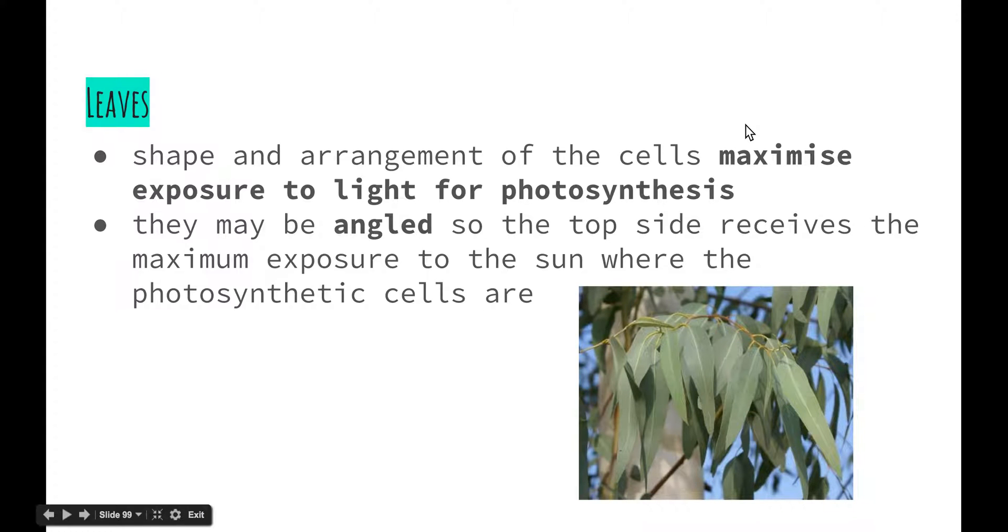The shape and arrangement of leaves usually helps to maximize the exposure of the cells to light in order to photosynthesize. They may be angled so that the top side receives the maximum exposure to the sun as this is where most of the photosynthetic cells are found.